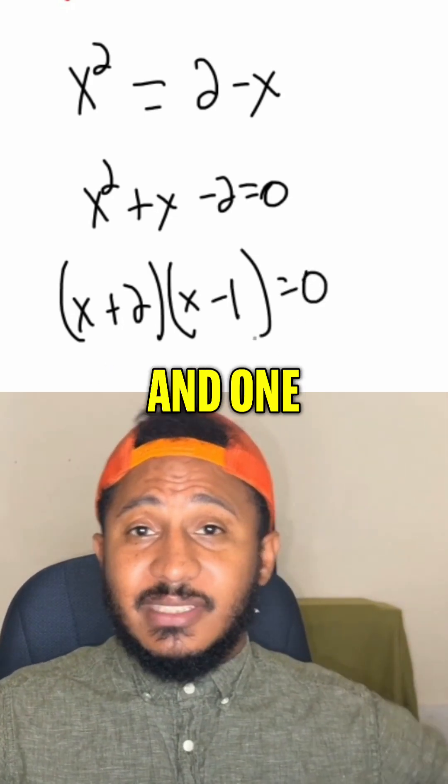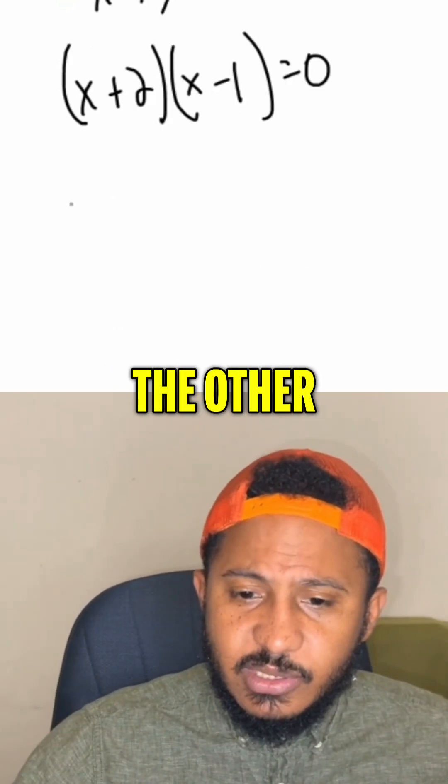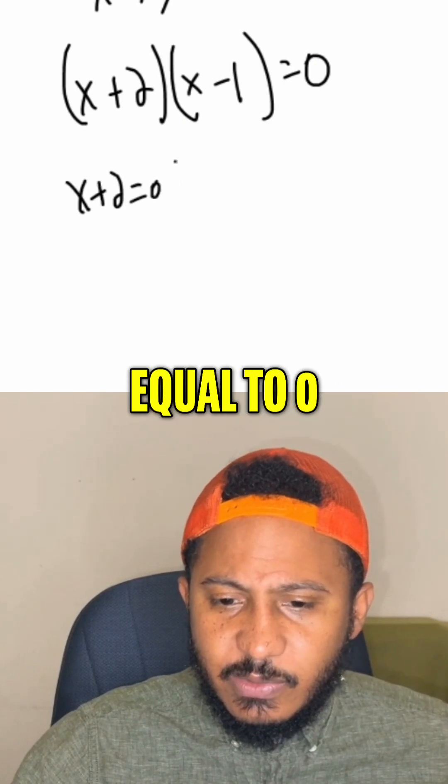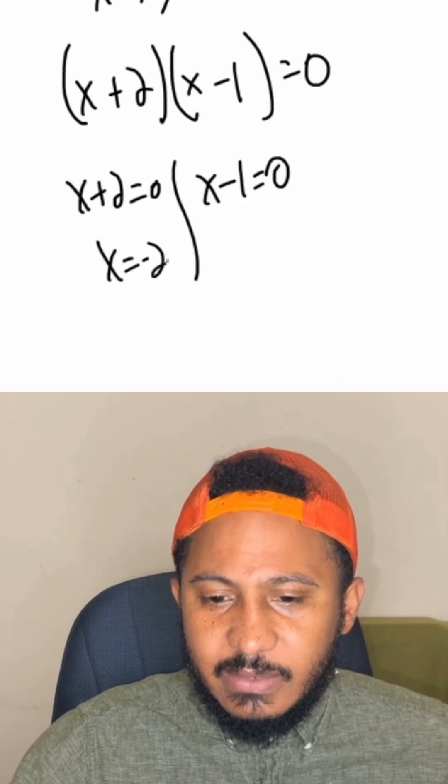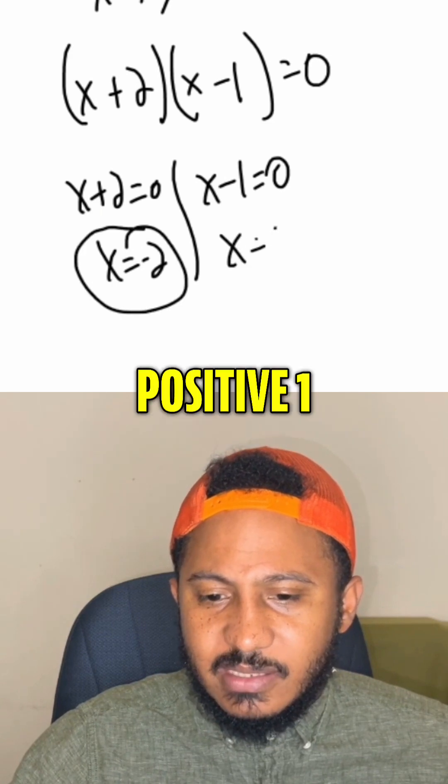So we got 0 on one side, we factor the other side. Now set each factor equal to 0. So x plus 2 equals 0, and x minus 1 equals 0. So x equals negative 2, and x equals positive 1.